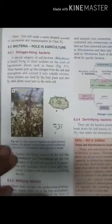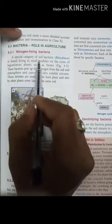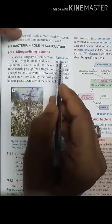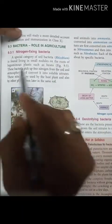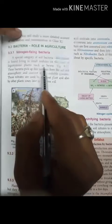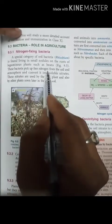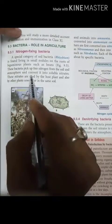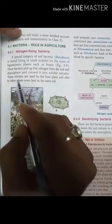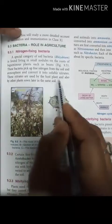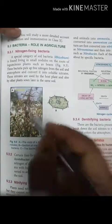A special category of soil bacteria is found living in small nodules on the roots of leguminous plants such as beans. These bacteria pick up free nitrogen from the soil and atmosphere and convert it into soluble nitrates. These nitrates are used by the host plant and also by other plants growing in the same soil.